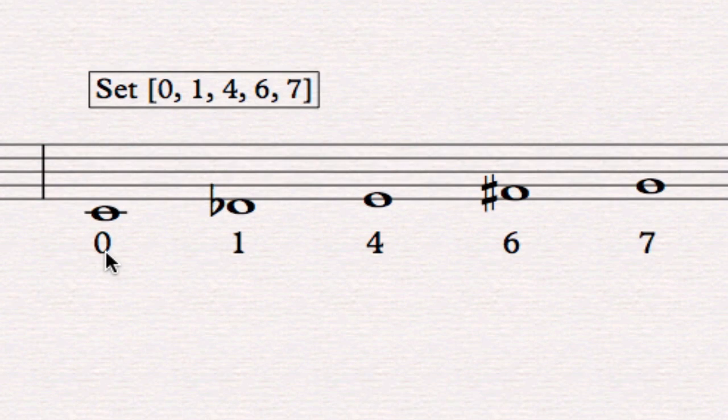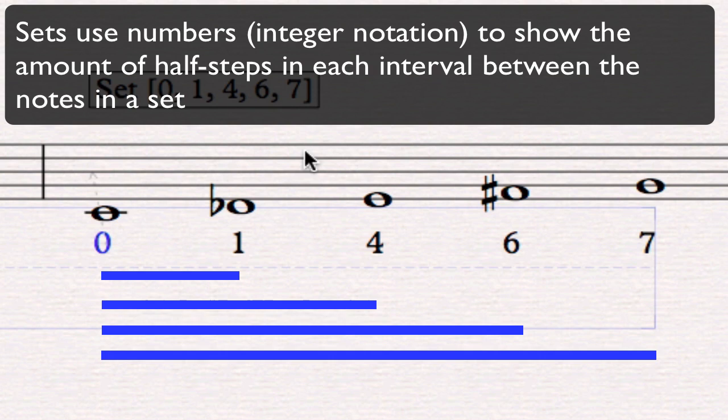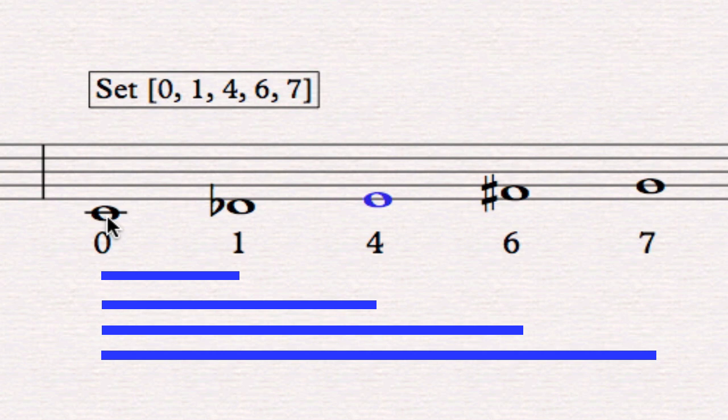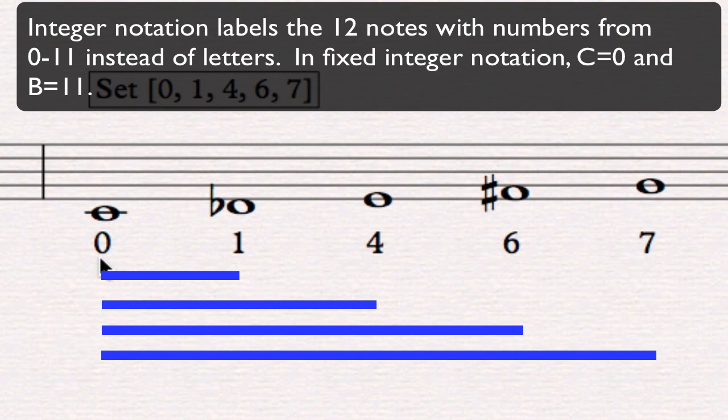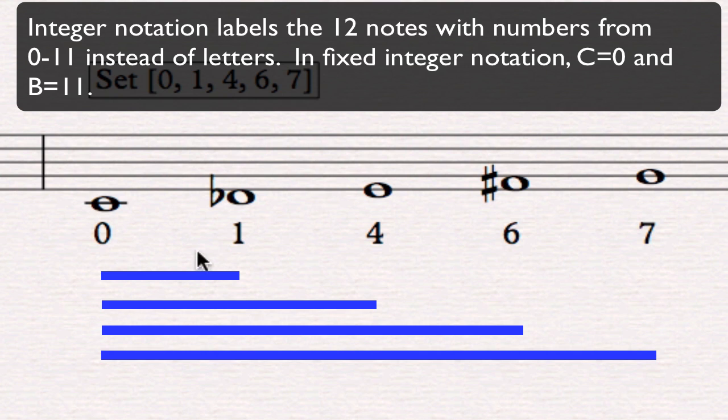What I have done, though, is below it I've labeled C as zero to show the interval distance, how many half steps between this first note and the next notes. So between C and D♭, for instance, there's one half step. And between C and E, there's four half steps, between C and F♯, six, between C and G, seven. So down below this set, I've labeled the notes by how much distance there is between them in half steps. And this is called integer notation. I just use numbers, integers, to label how many half steps I've moved between the notes.